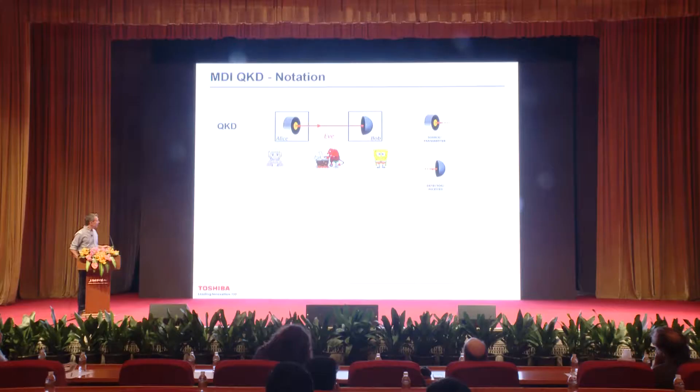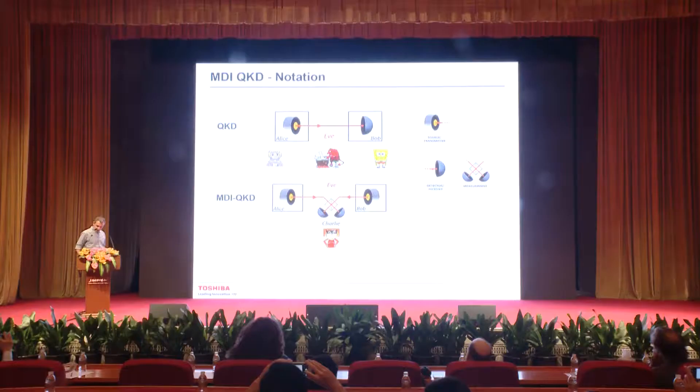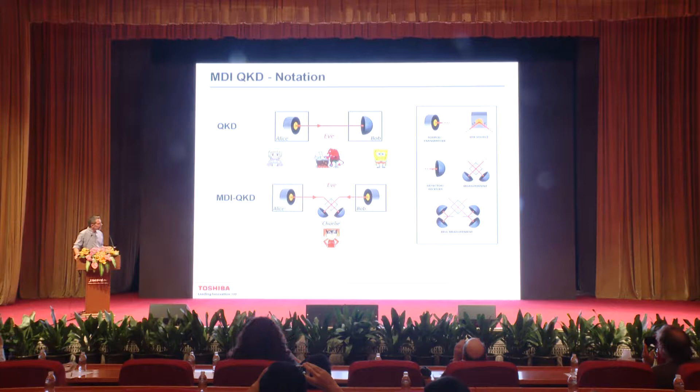For MDI-QKD, we introduce another character: Charlie. Charlie owns detectors. In QKD, you only need one detector to click, whereas in the typical MDI-QKD scheme, you need two detectors to click in coincidence — that's why you see two detectors. I will also use other drawings, for example a source of entangled state or a Bell measurement with a beam splitter and two polarizing beam splitters.